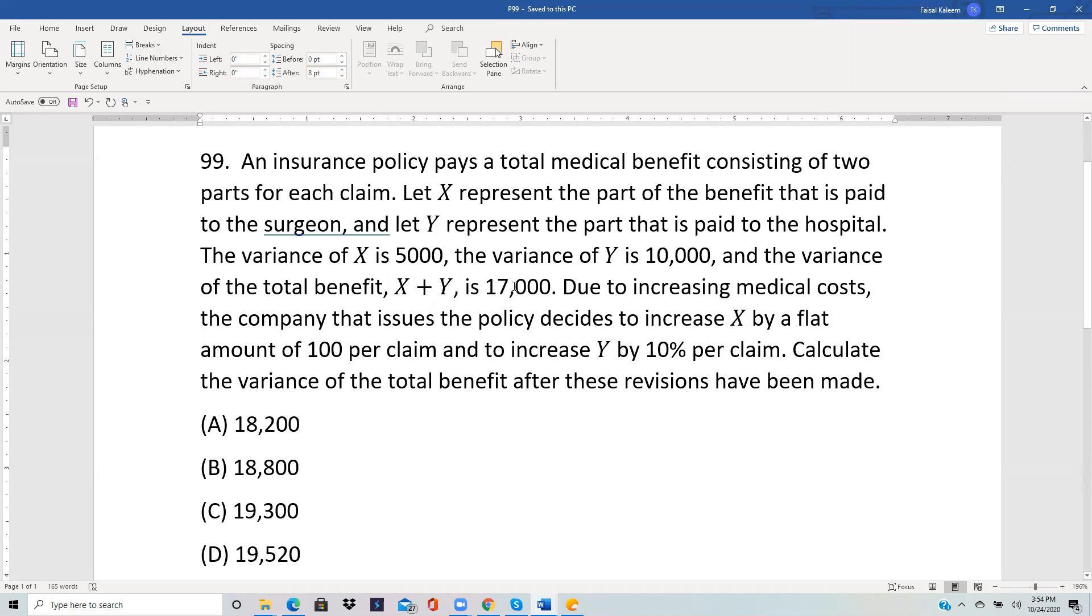the company that issues the policy decides to increase X by a flat amount of 100 per claim and Y by 10% per claim. Calculate the variance of the total benefit after these revisions have been made.